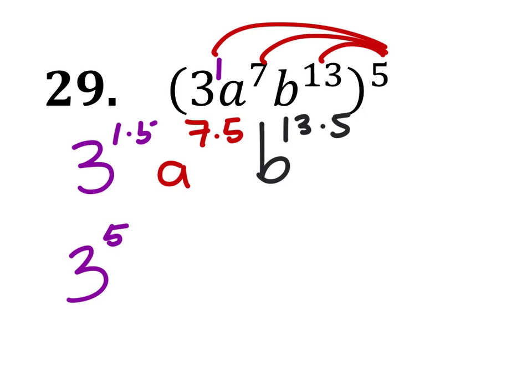So, that would be 3 to the power of 5, a to the power of 35, and b to the power of 65. Done.